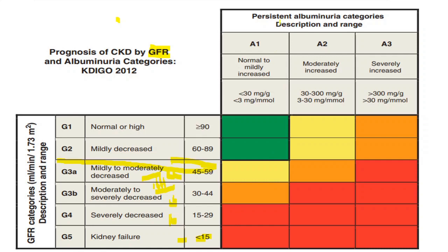The albuminuria criteria are A1, A2, and A3, measurable as 24-hour albumin excretion. A1 is normal to mildly increased, less than 30 mg per 24 hours. A2 is 30 to 300 mg per 24 hours or 30 to 300 milligrams per gram of creatinine. A3 is severely increased albuminuria, more than 300 mg per 24 hours.